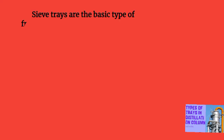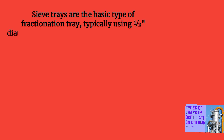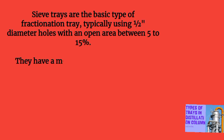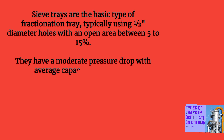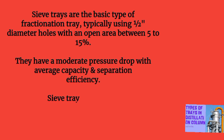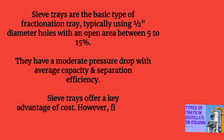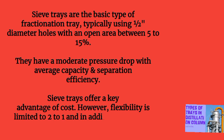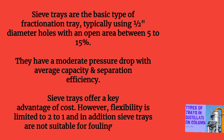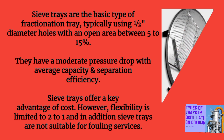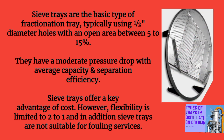Sieve trays are the basic type of fractionation tray, typically using one-half diameter holes with an open area between 5 to 15 percent. They have a moderate pressure drop with average capacity and separation efficiency. Sieve trays offer a key advantage of cost. However, flexibility is limited to 2 to 1 and in addition sieve trays are not suitable for fouling services.